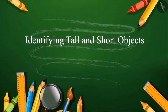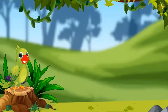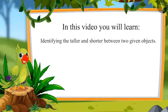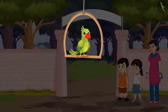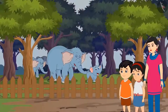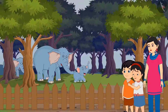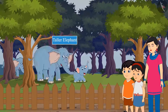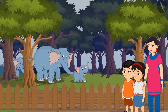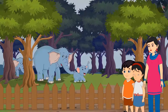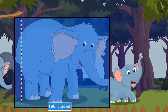Identifying tall and short objects. Hello children, I am the parrot and I welcome you to this lesson. Today in this video, we will learn identifying the taller and shorter between two given objects. Today is a holiday for Chotu and Pinky. They have come to the zoo with their mother. They saw several animals there. First of all, they saw some elephants. Mummy, look how tall this elephant is. Very tall. And how short is this elephant, Pinky? It seems that this shorter elephant is the child of this taller elephant. Yes, this elephant is taller and this elephant is shorter.